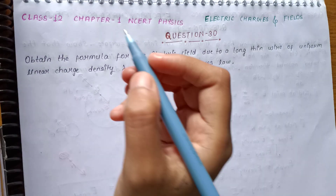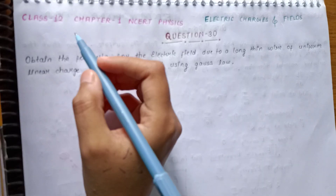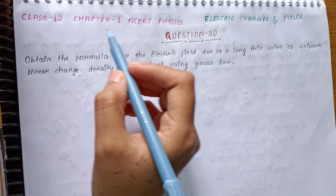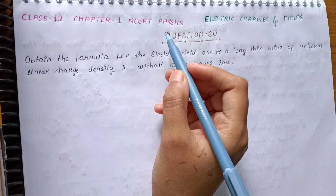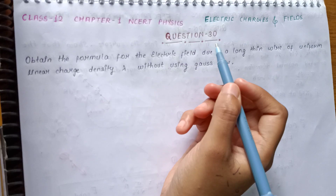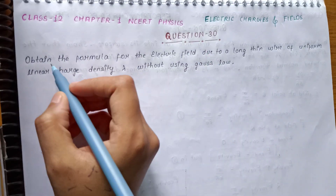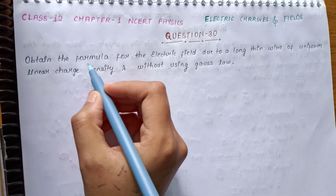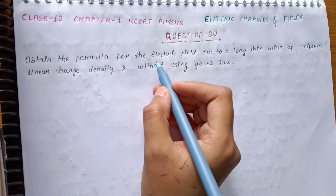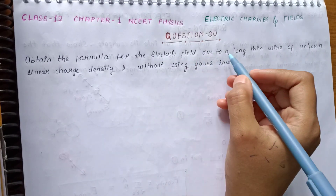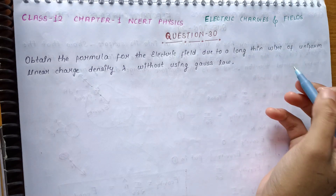Hello students, today I am going to discuss Class 12 Chapter 1 CRT Physics question number 30. This question says: obtain the formula for the electric field due to a long thin wire.